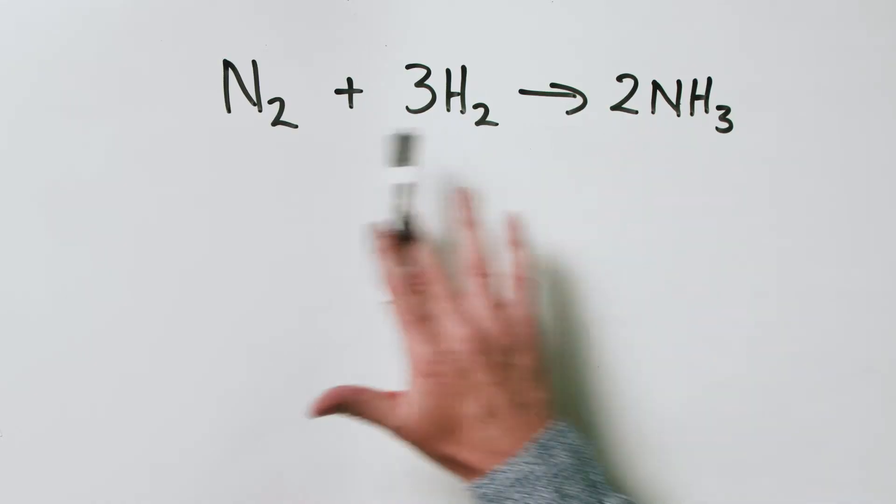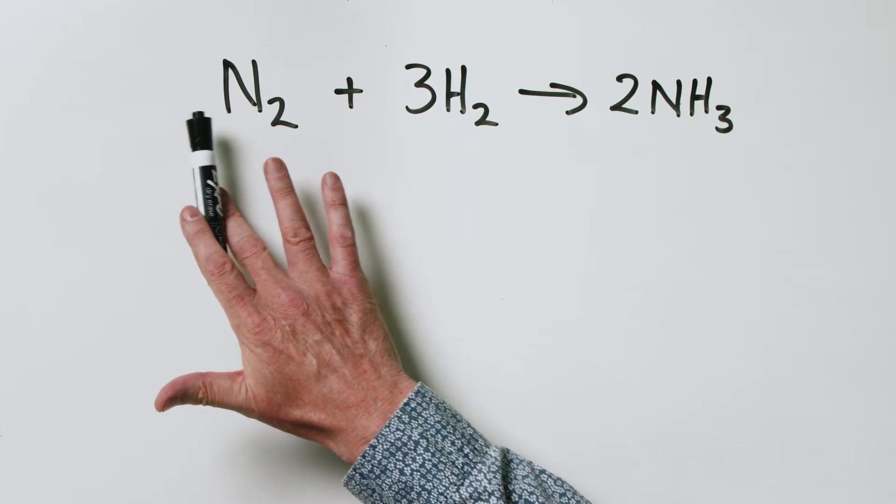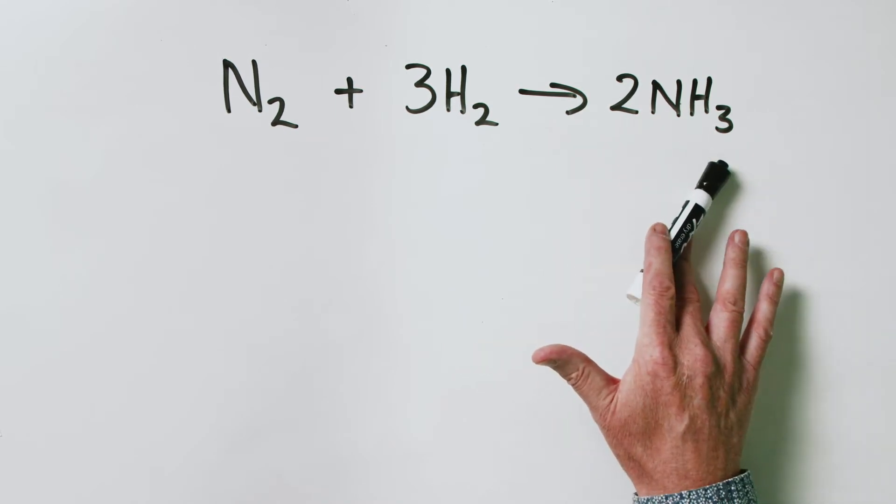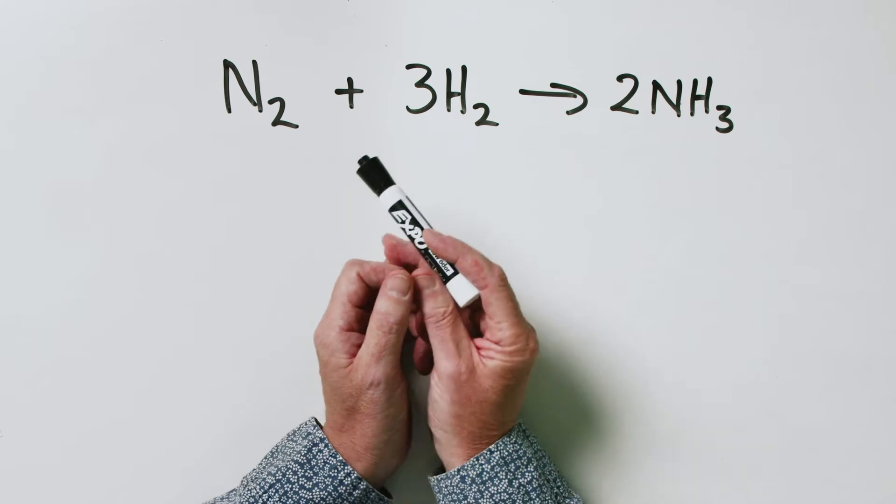We spoke about the mole ratio idea and the fact that the balanced chemical equation tells you the mole ratio in which reactants react to give products. We talked about the number of moles of nitrogen, the number of moles of hydrogen, and the number of moles of ammonia. In the lab this isn't particularly convenient because we want to talk in terms of masses of materials, because that's what we weigh out on our balances in order to do chemical reactions.